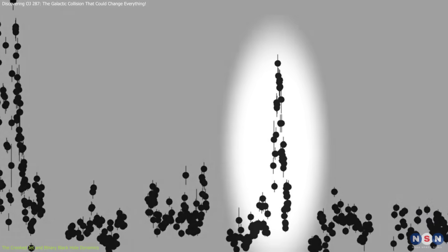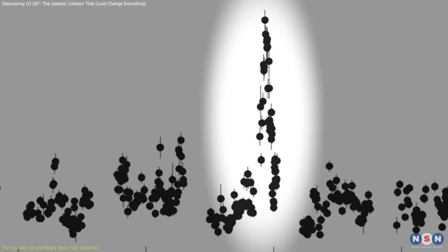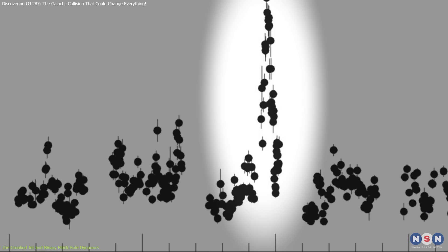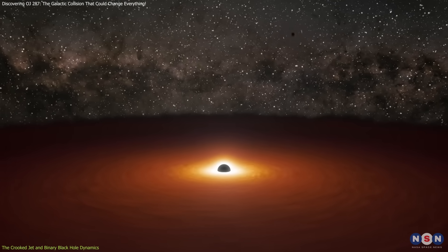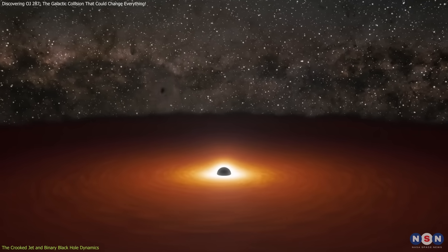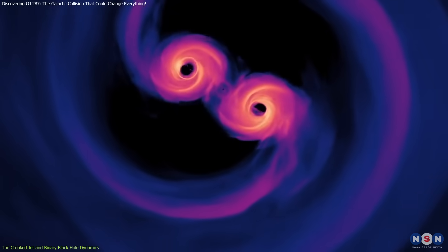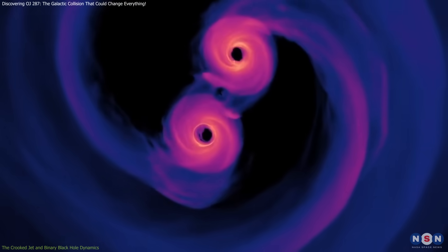In 2021, OJ 287 brightened 100-fold in 12 hours as its smaller component plunged through the larger one's accretion disk, offering rare insight into binary black hole dynamics.